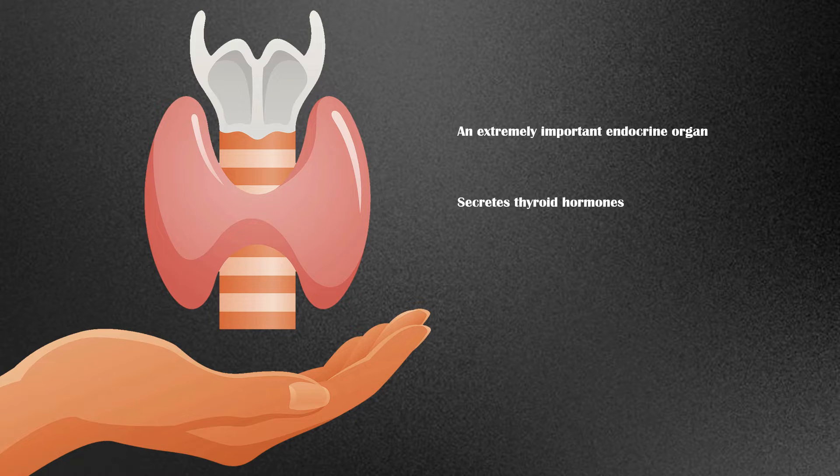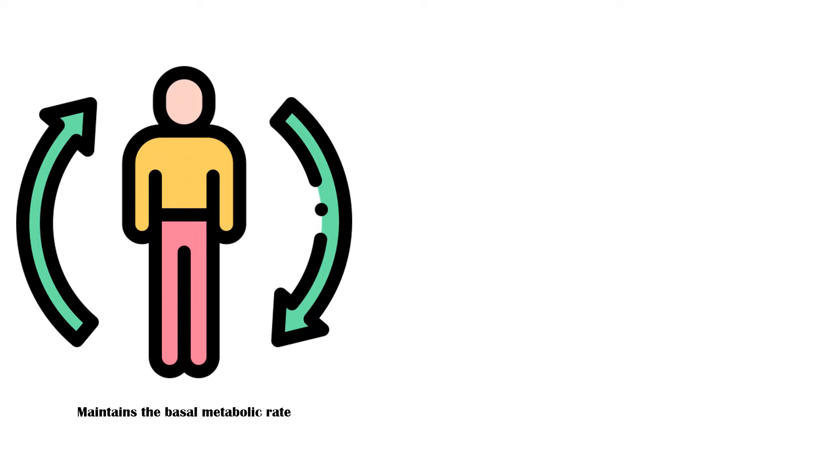The main function of thyroid hormone is to maintain the basal metabolic rate, which is the rate at which the body uses energy at rest to maintain vital functions such as breathing and keeping warm.